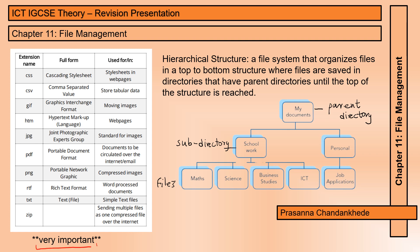It's very important we know extension names and especially what they're used for. CSS stands for Cascading Style Sheet and is used in style sheets and web pages. CSV stands for Comma Separated Values and stores tabular data — data stored in tables, such as in Excel.